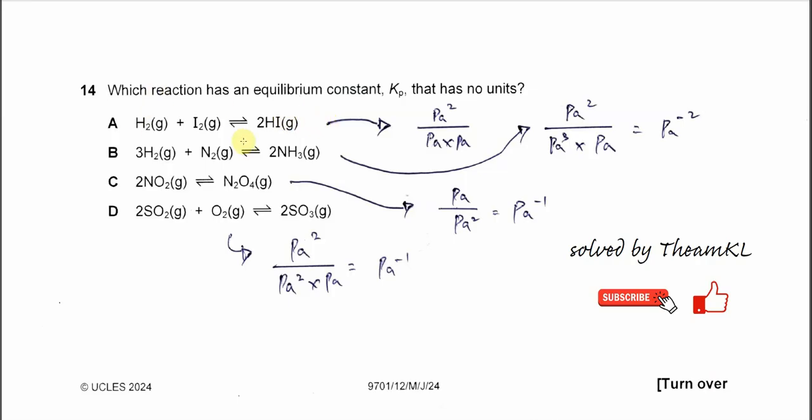For option A, we know that because there are two moles of hydrogen iodide, the partial pressure units is Pascal squared. It's over the partial pressure of H2 and iodine.